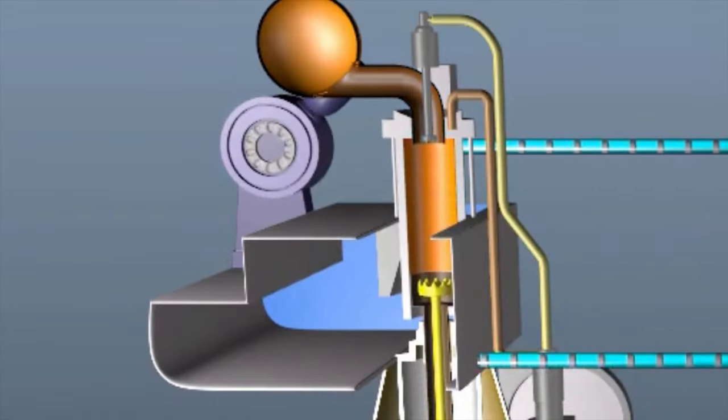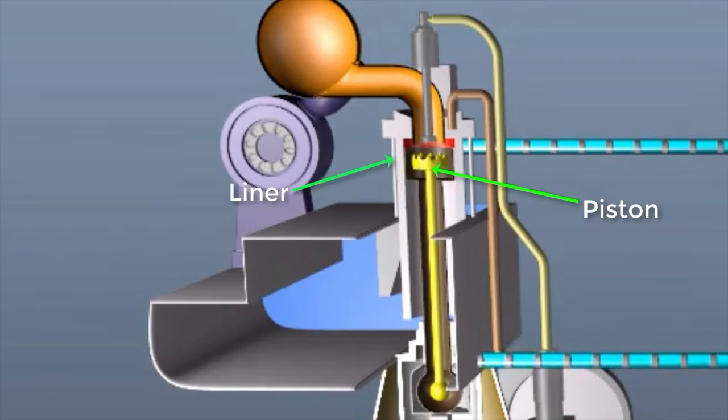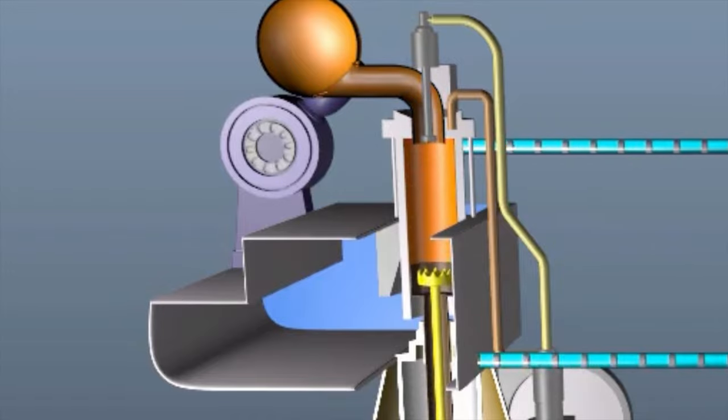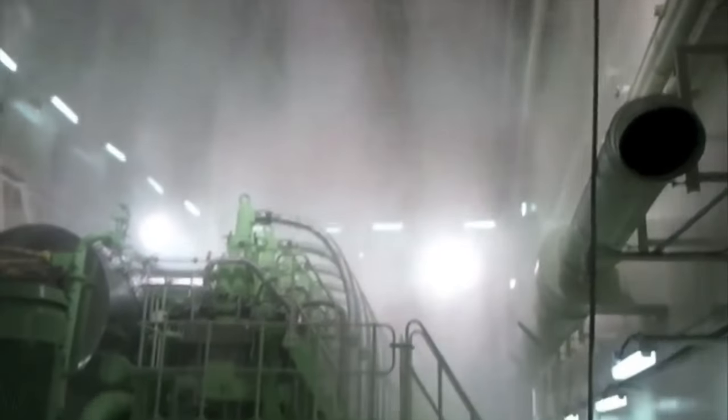The combustion gases transfer the heat to the adjacent parts, that is the piston, liner and cylinder head which gets heated up. If these heated parts are not cooled down, the ship's engine will cease to operate due to high temperature.